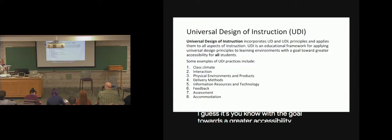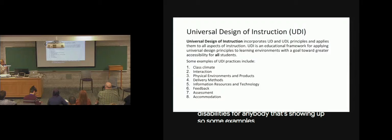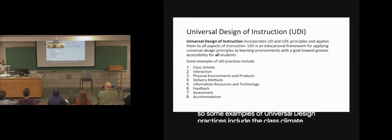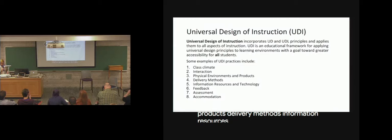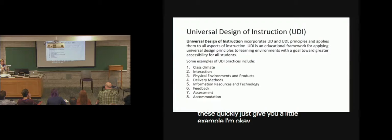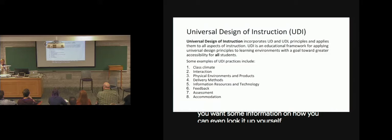So that sort of matches up universal design and the principles of universal design for learning and applies them to all aspects of instruction. So the curriculum, but also the physical environment and things like that. With the goal towards a greater accessibility for all students, not just students with disabilities, but anybody that's showing up. So some examples of universal design practices include the class climate, interaction, physical environments and products, delivery methods, information resources and technology, feedback, assessment, and accommodation.